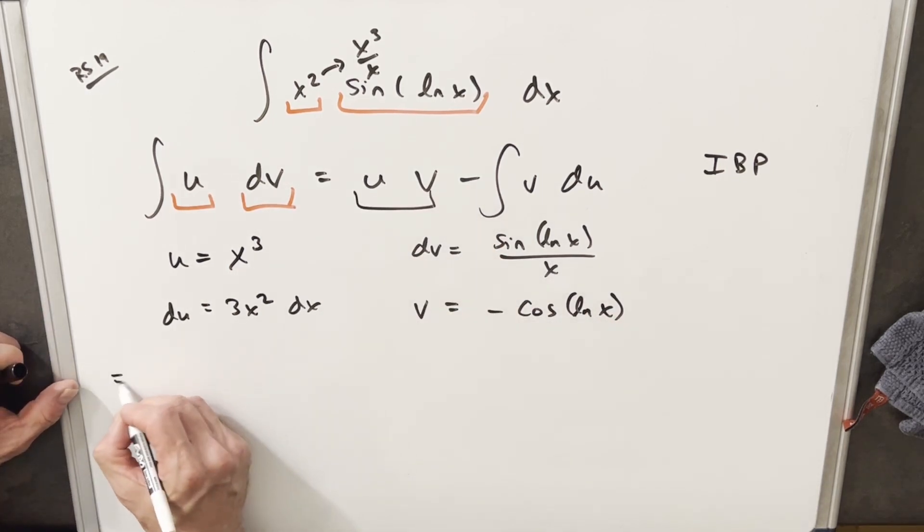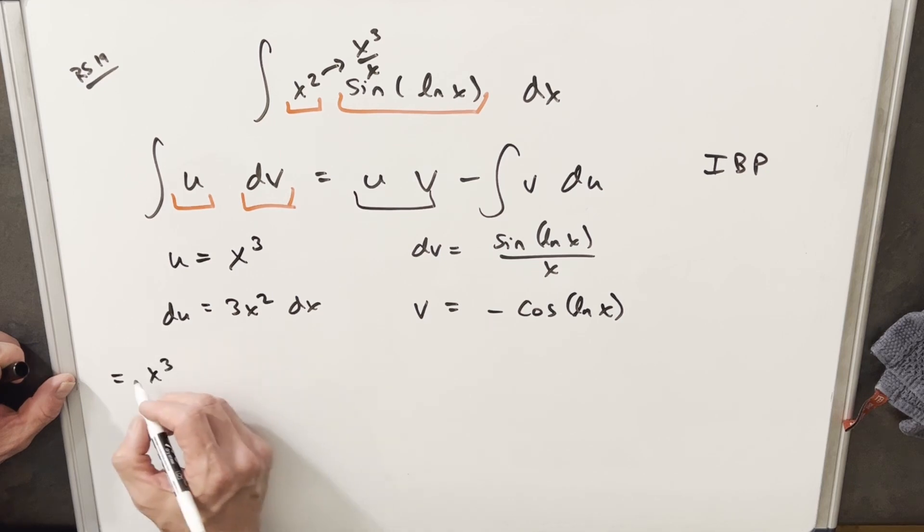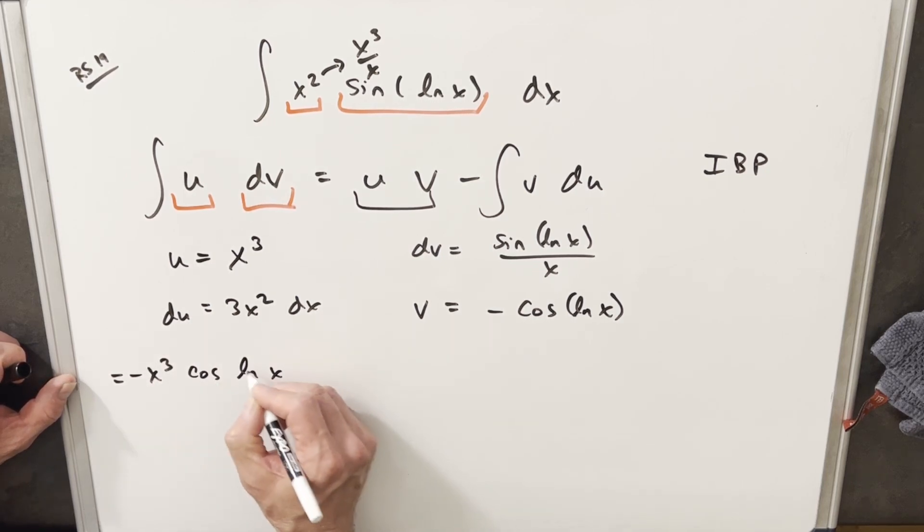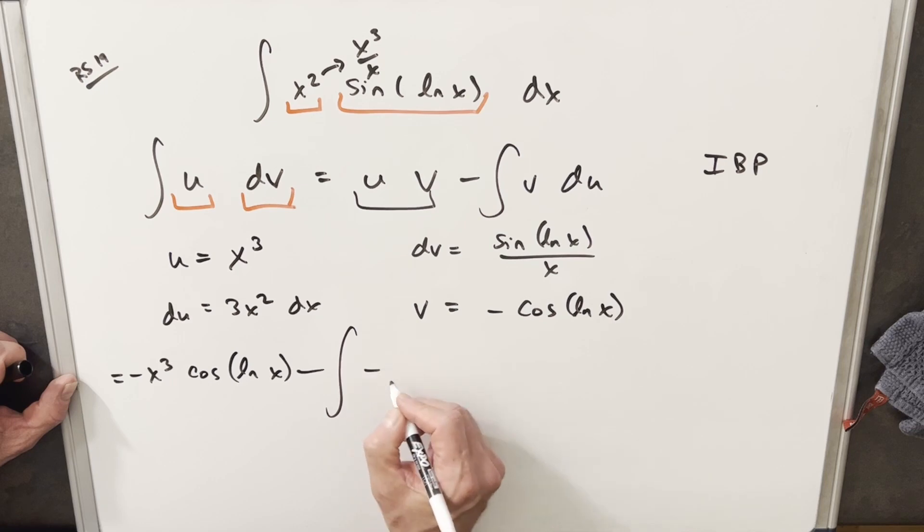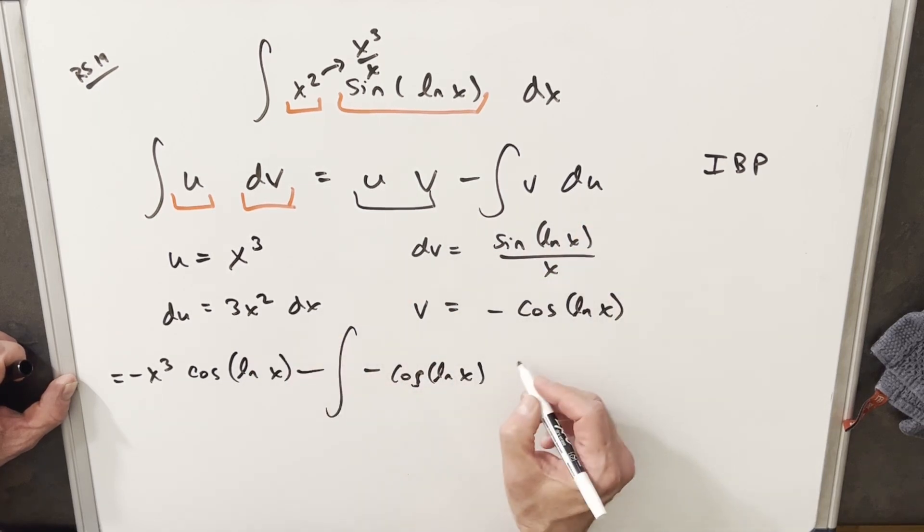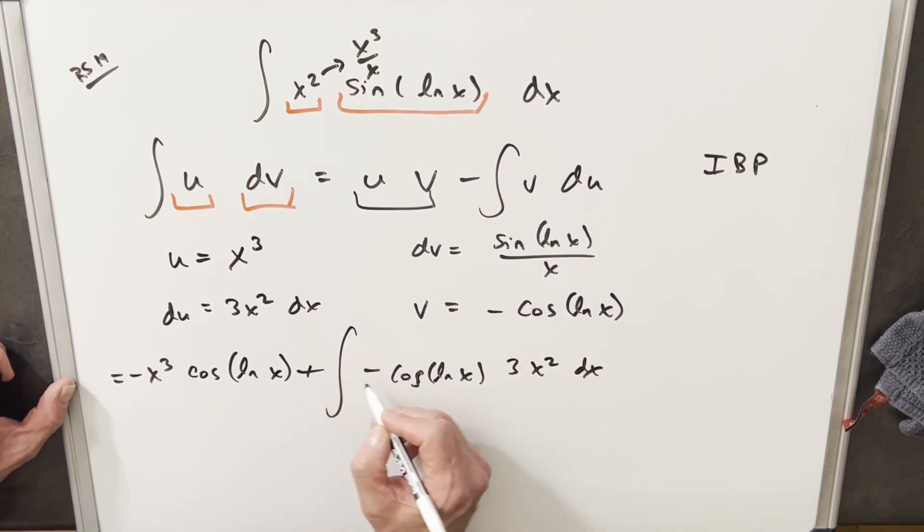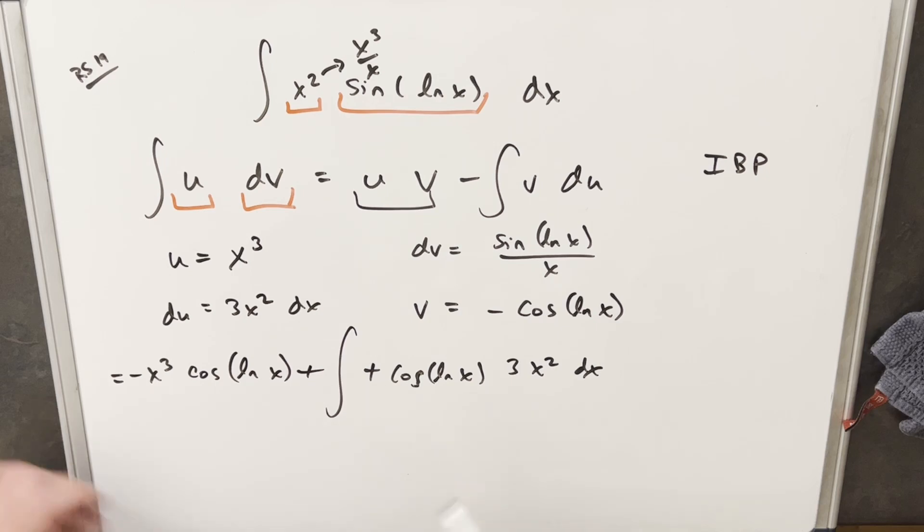Then we'll have part of our solution right here for uv. So this is going to be x cubed. We'll have a minus from the cosine, so we're going to have minus cosine ln x. And we're going to have minus, then we're going to be integrating our v value, which is going to be minus cosine ln x, and then for our du, we're going to have this 3x squared dx. But because we have minus minus, these are going to cancel, and we can write these as a plus. I'm just going to take my 3 and bring it up front here.